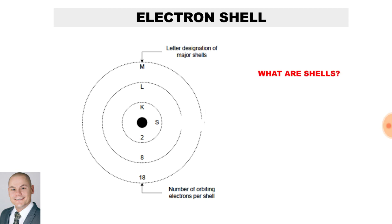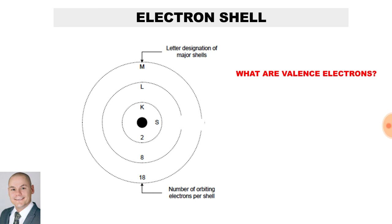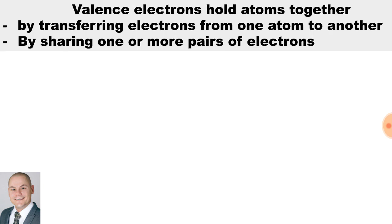What are shells? Shells are paths around which electrons in an atom move. What are valence electrons? They are found in the outermost shell. Valence electrons hold atoms together by transferring electrons from one atom to another, and by sharing one or more pairs of electrons.